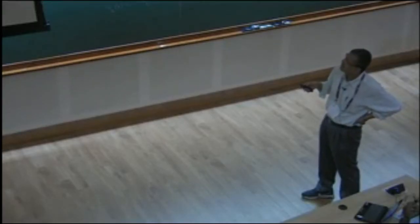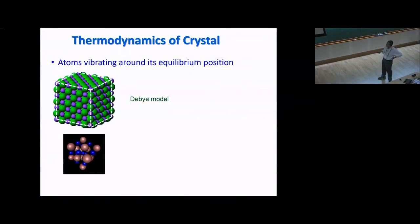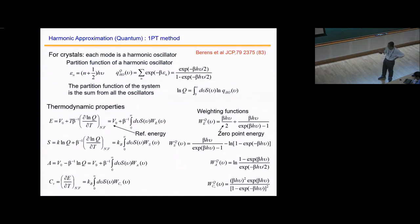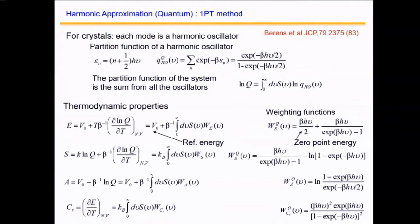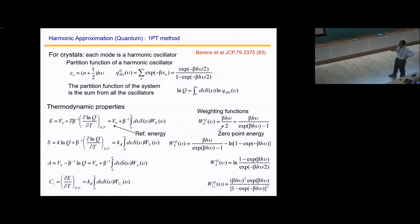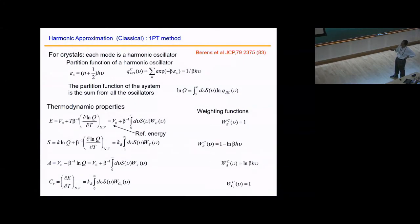We will start with what happens in a crystal — a Debye model — where atoms are jiggling around. We calculate the density of states, and using this density of states one can calculate, within the harmonic approximation, the partition function. Once we have access to the partition function we can calculate all thermodynamic quantities. The harmonic oscillator can be treated classically or quantum mechanically, so one can get quantum corrections from simulation.